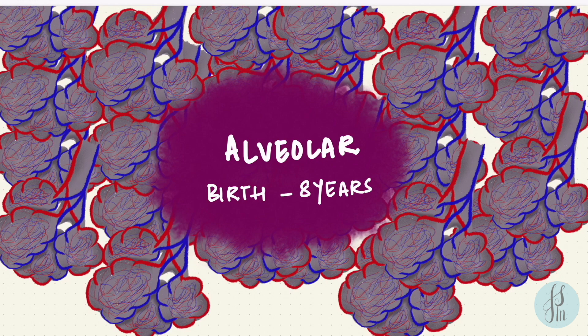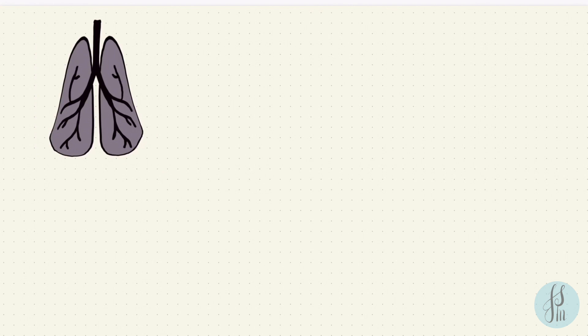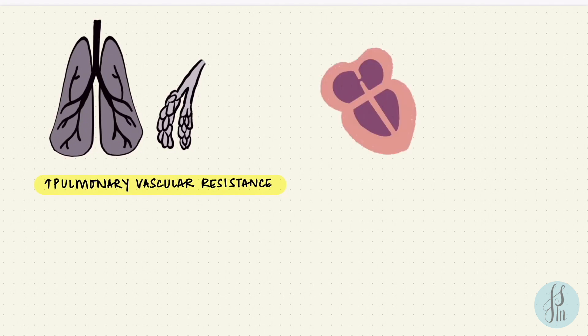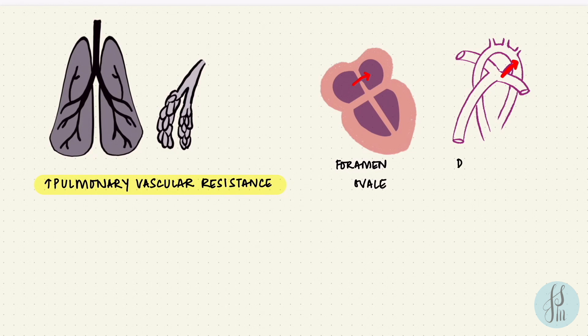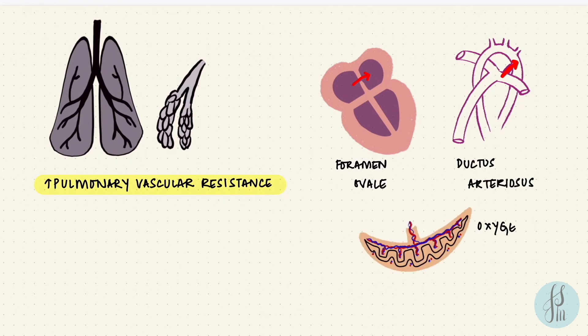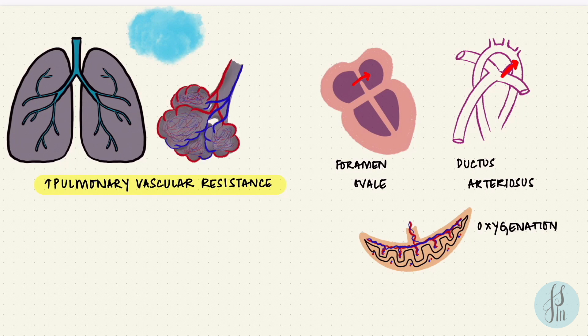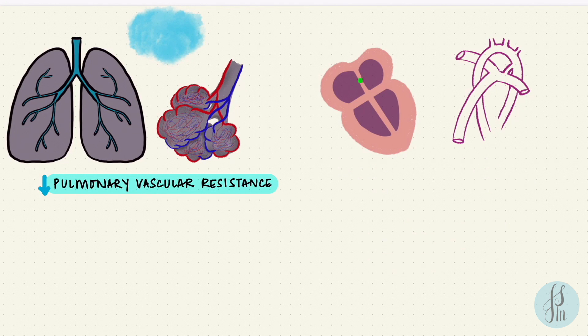For gas exchange we also need circulation. During fetal life, the lungs are filled with fluid and the alveoli are collapsed. Pulmonary vascular resistance is high, and the heart has shunts — the ductus arteriosus and foramen ovale — to bypass the lungs, since oxygenation is done by the placenta. At birth, the baby takes a breath, the lungs fill with air, and the fluid is resorbed. Pulmonary vascular resistance drops, the cardiac shunts close, blood flows through the lungs, and gas exchange begins.